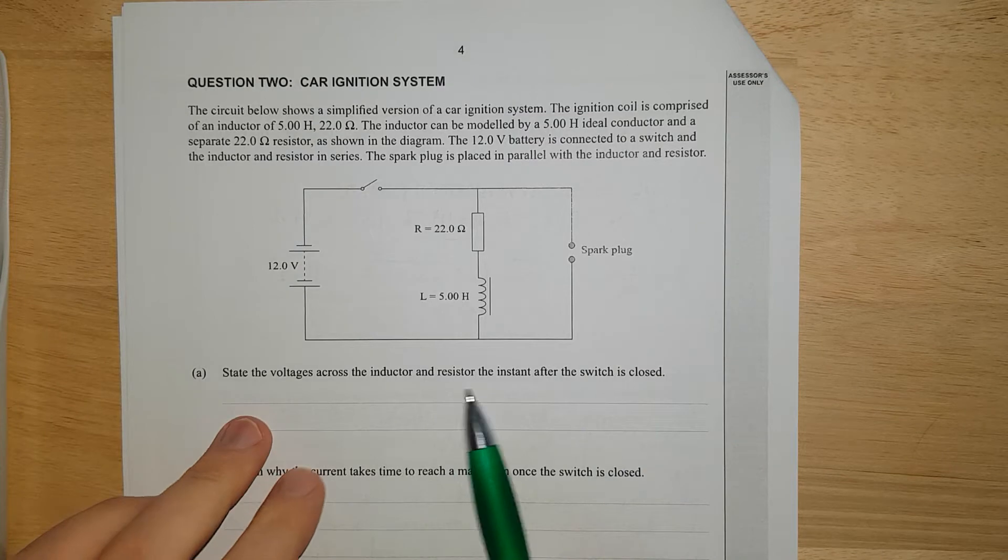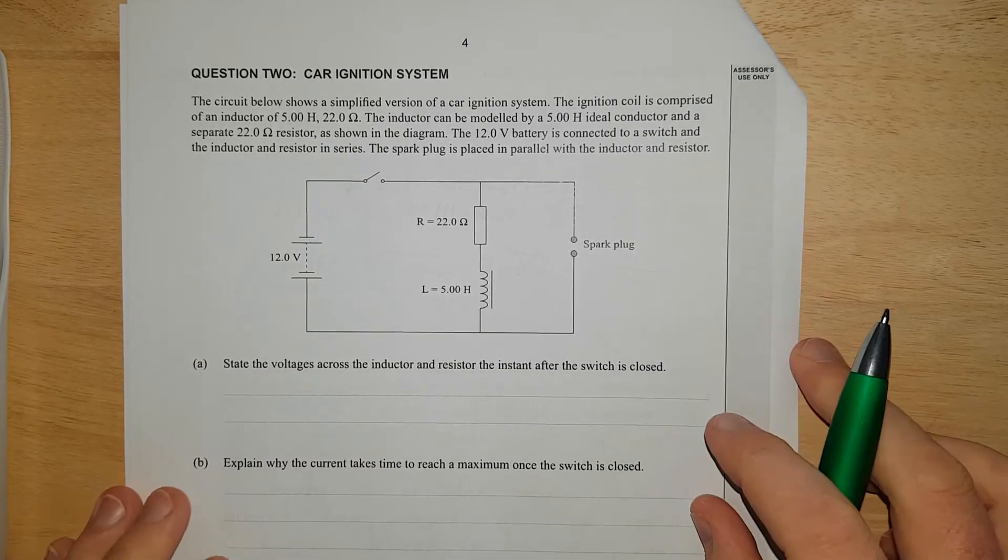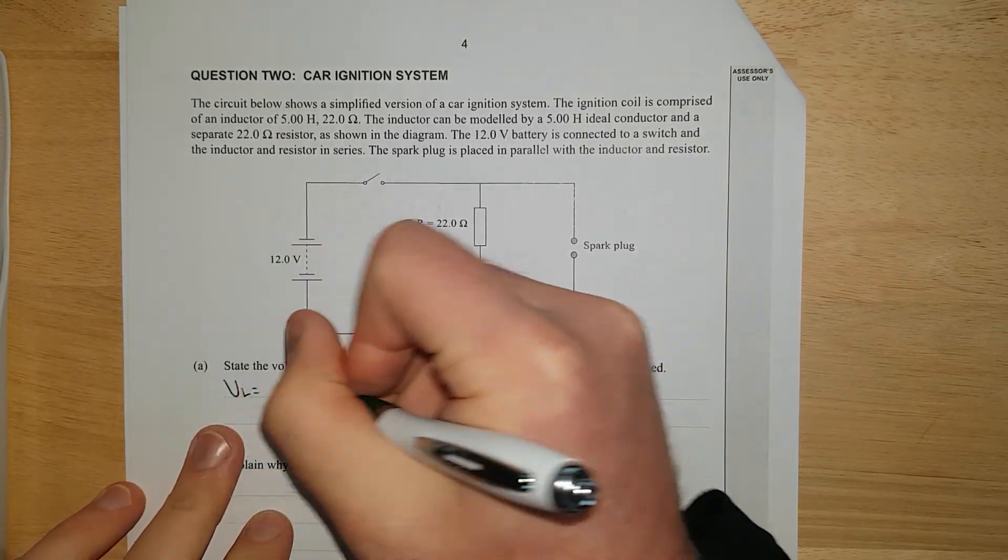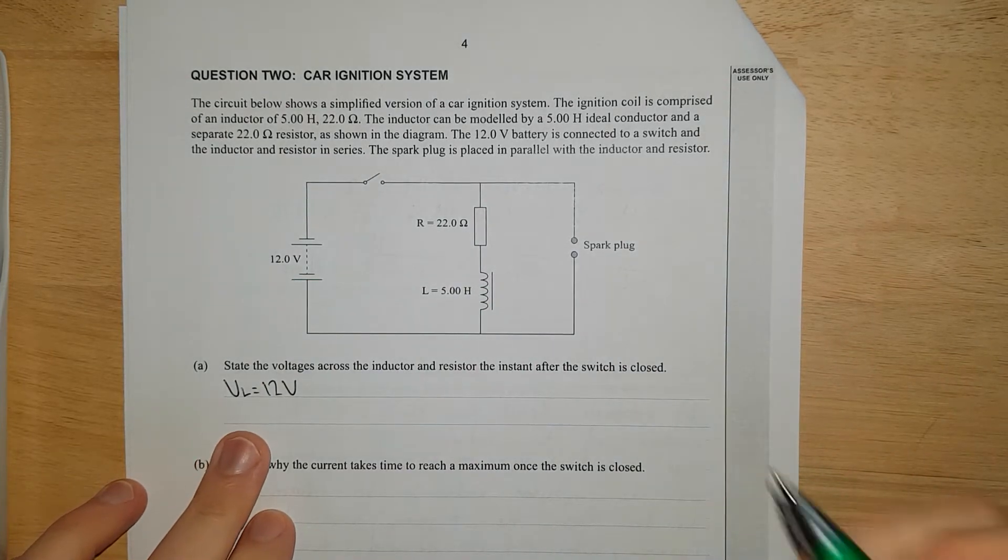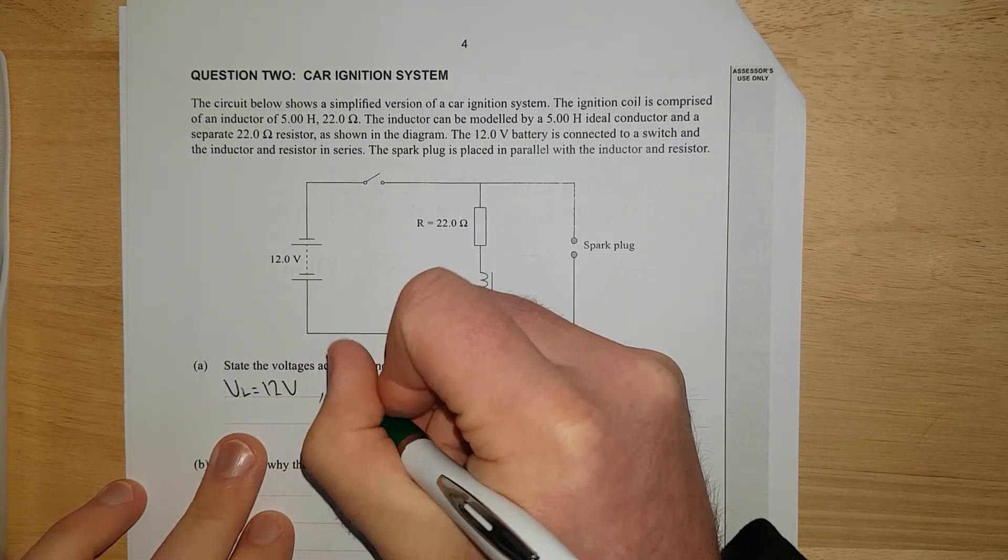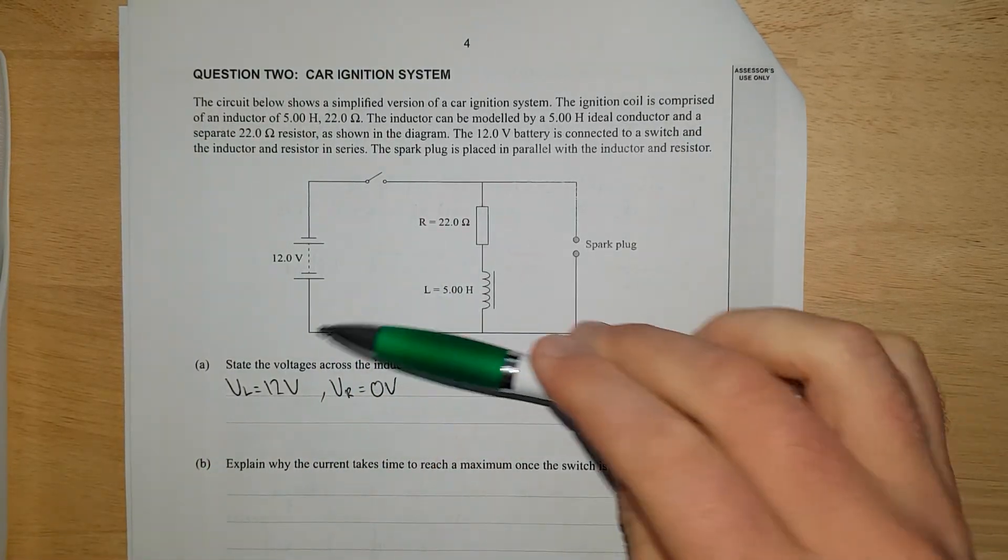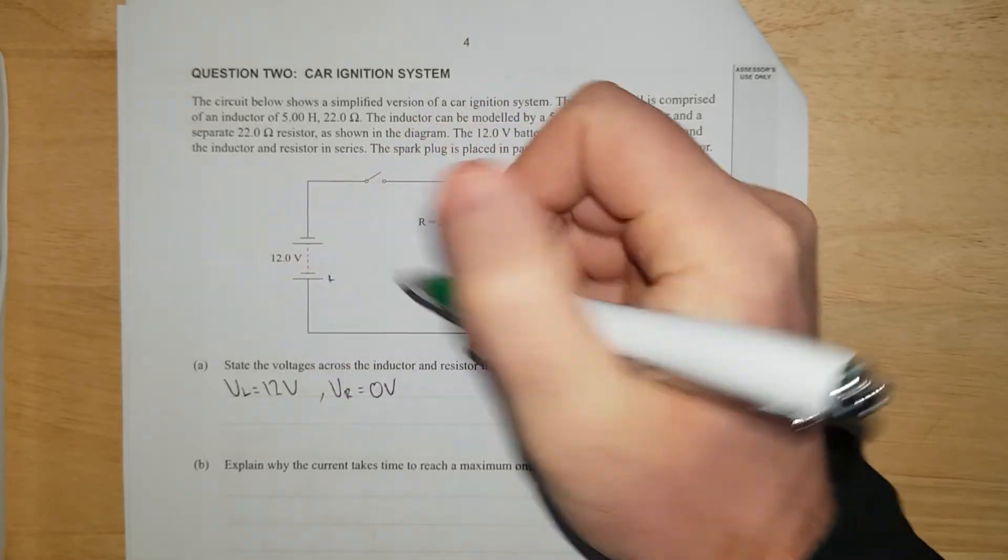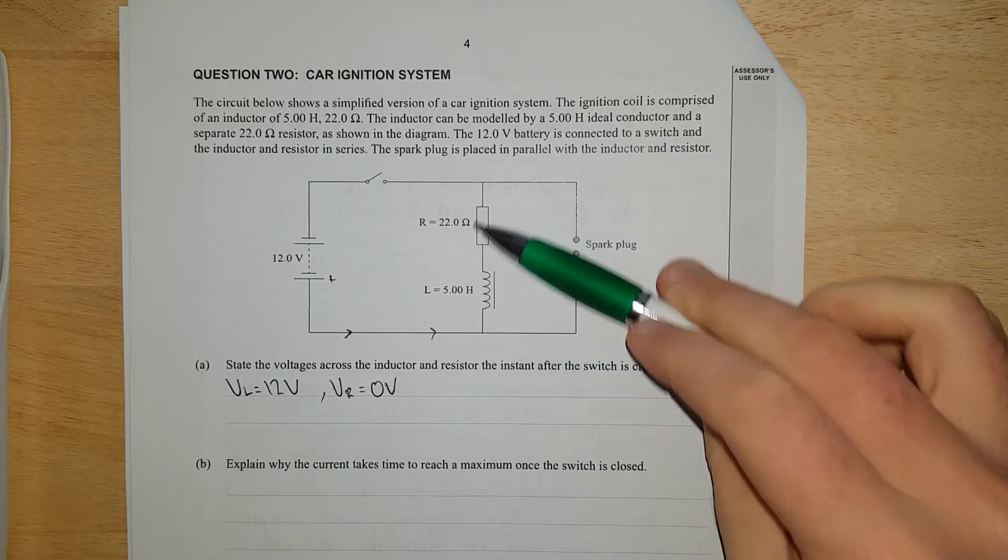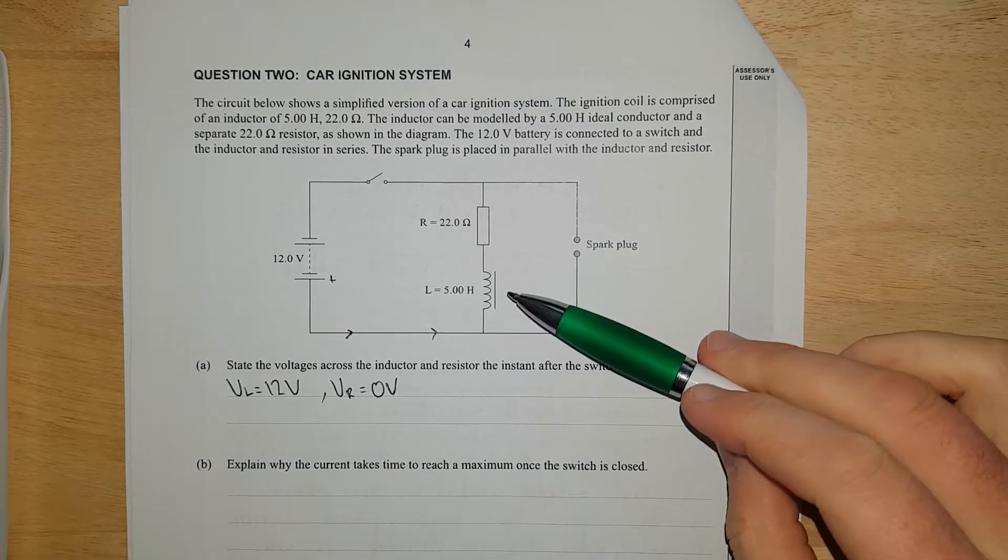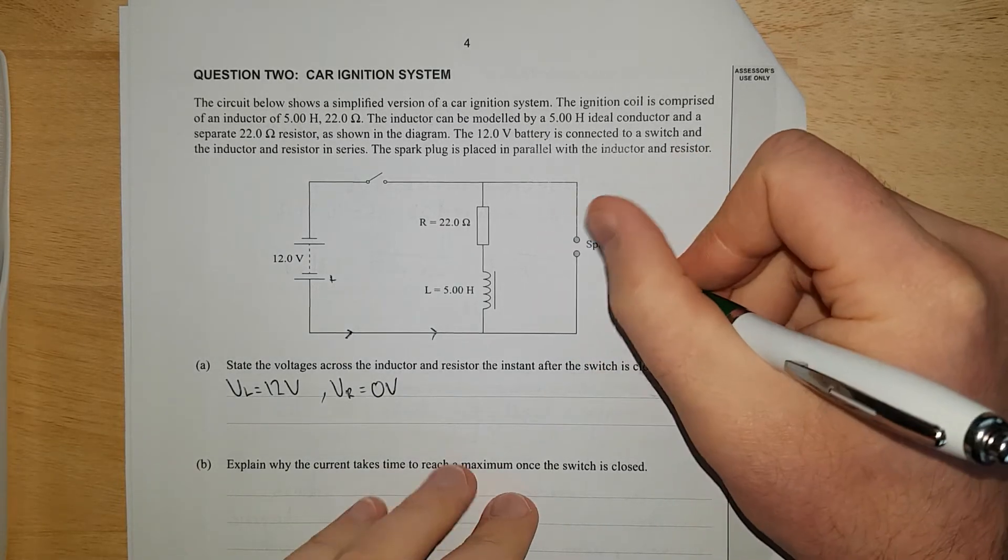State the voltages across the inductor and resistor instant after the switch is closed. So VL is going to be equal to 12 volts because it'll match the supply. And VR is going to be equal to 0 volts because when you flip the switch, the current, conventional current will flow this way. Initially, the inductor, you get a change in flux, which induces a voltage.